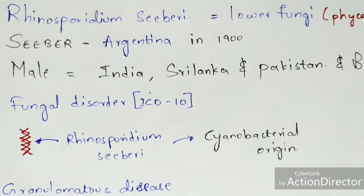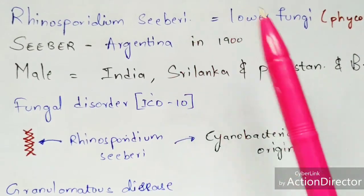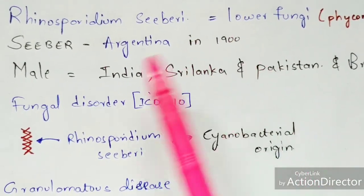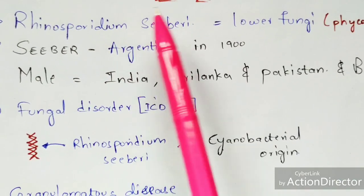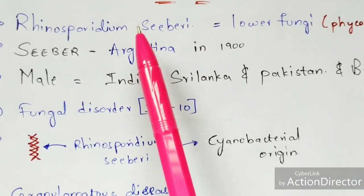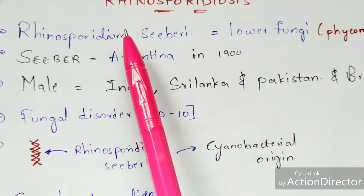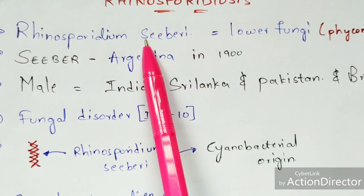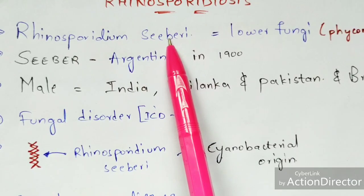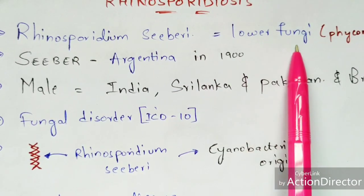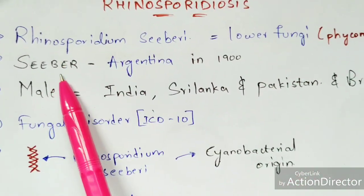Coming to the introduction part of rhinosporidiosis, it is a disease caused by a causative organism. The causative organism is called Rhinosporidium seeberi, and it belongs to the lower fungi class called Phycomycetes.